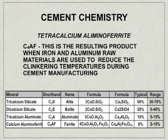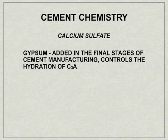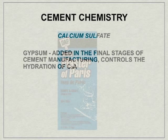The fourth compound, also proportioned at about 5 to 15%, is tetracalcium aluminoferrite, C4AF. This is the resulting product when iron and aluminum raw materials are used to reduce the clinkering temperature during the cement manufacturing process. The last material is calcium sulfate, or gypsum. This is added in the final stages of cement manufacturing. It controls the hydration of C3A and also controls drying shrinkage. It is also considered to play a lesser role in strength development through 28 days. Many of you may be familiar with it because it actually is plaster of Paris.